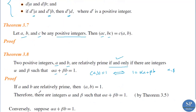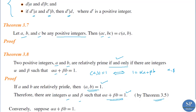To prove the first part: suppose a and b are relatively prime, then GCD(a, b) equals 1. By the previous theorem (theorem 3.5), there are integers alpha and beta such that alpha·a plus beta·b equals 1. Since d equals GCD(a, b) equals 1, then 1 can be expressed as alpha·a plus beta·b by the previous theorem. So the first part is complete.